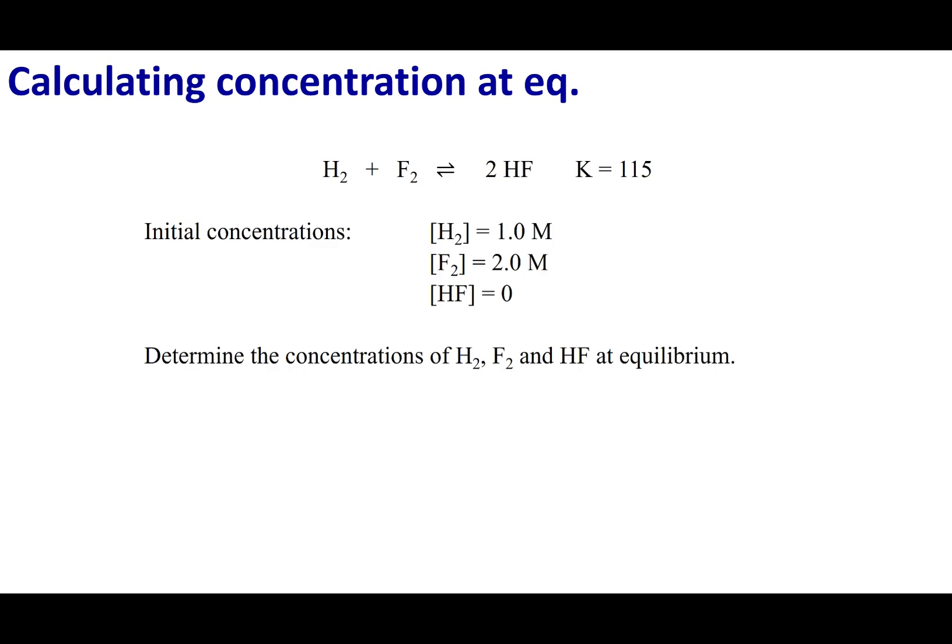Let's delve into one very popular type of problem: they give you an equilibrium, they give you the initial concentrations, and they want you to figure out the concentrations at equilibrium. I'm going to set up the problem starting with no products, but initially having two reactants — H2 and F2 at 1 molar and 2 molar respectively. Calculate the concentrations of H2, F2, and HF at equilibrium.